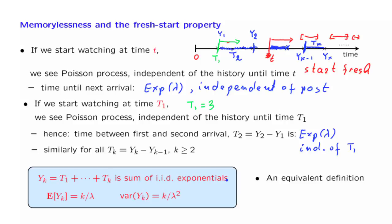A final implication, which is a little more practical: if you want to simulate the Poisson process, how would you do it? Given what we now know, the most natural way is the following. We generate independent, identically distributed exponential random variables using, for example, a random number generator, and then use these exponential random variables to construct the values of the inter-arrival times — and this way construct a complete time history of the Poisson process.